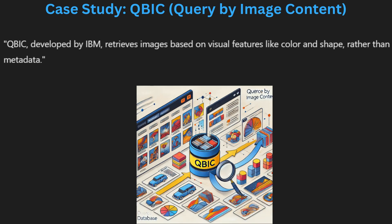QBIC, or Query by Image Content, is one of the earliest systems that allows users to search for images based on their visual features. It was developed by IBM. QBIC focuses on color, shape and texture to retrieve relevant images from the database. Instead of relying on text or tags, users can query the system by uploading an image or sketching an example, and QBIC finds similar content. This technique is useful in industries like fashion, medical imaging and art, where visual similarity is crucial. QBIC revolutionized how multimedia databases handle image searches.